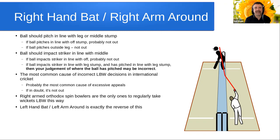This is — and you can check through the various statistics databases — the most common cause of incorrect LBW decisions in international cricket. That is where we have statistics on the number of LBW decisions overturned by the third umpire. The most common situation where those decisions are overturned is with a right-hand batter facing a right-arm bowler bowling around the wicket. It is also one of the most common causes of excessive appeals. Remember the mantra: if in doubt, it's not out.